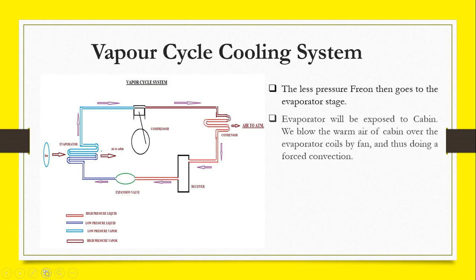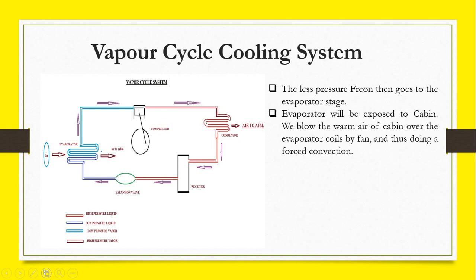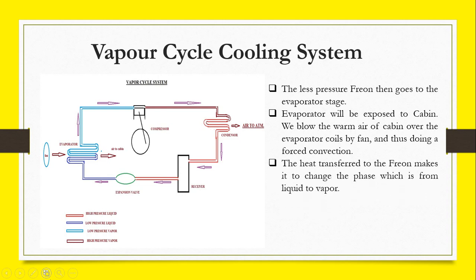The less pressure Freon then goes to the evaporator stage. The evaporator will be exposed to the cabin. We blow the warm air of the cabin over the evaporator coils by fan and thus doing a forced convection.